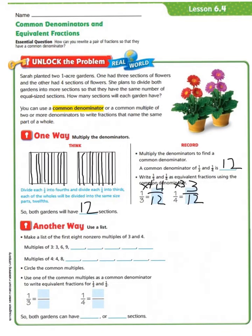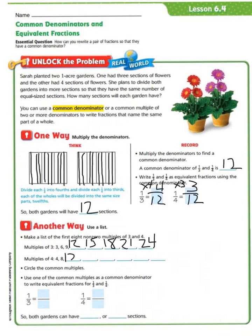Now let's take a look at another way, and that is to use a list. We make a list of the first eight non-zero multiples of three and four. The multiples of three are: 3, 6, 9, 12, 15, 18, 21, and 24. The multiples of four are: 4, 8, 12, 16, 20, 24, 28, and 32.